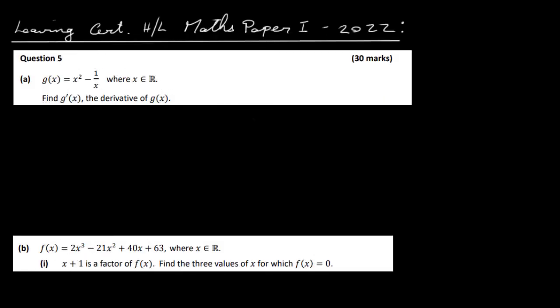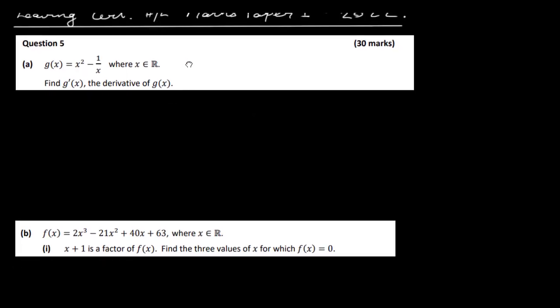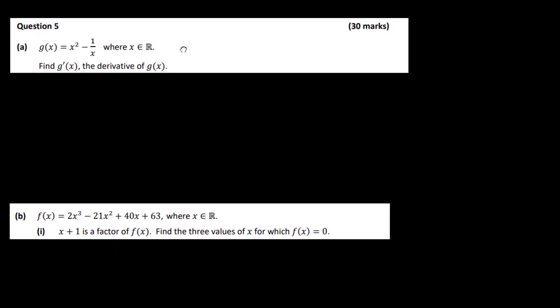Let's have a look at the Leaving Cert Higher Level Maths Paper 1, 2022, question 5. In part A we have a function g of x equal to x squared minus 1 over x. We need to find g prime of x, the derivative of g of x.